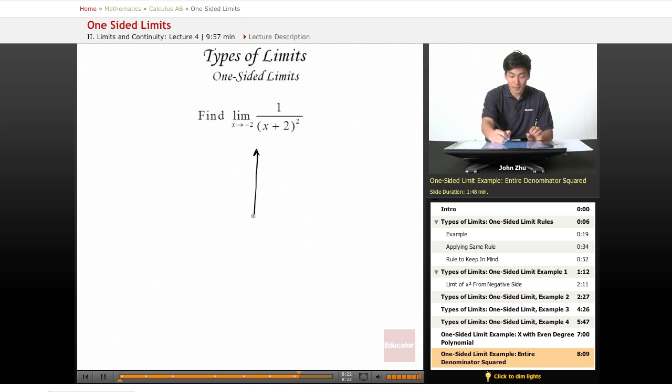If we graph this, we see that there is an asymptote at negative 2. And the graph has the following characteristic. And there are asymptotes at y equals 0 as well.